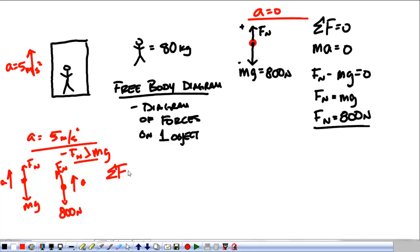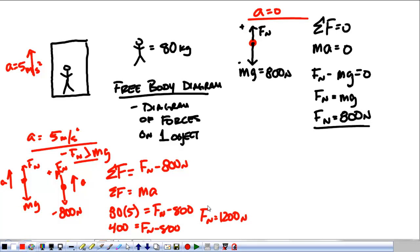We still have our weight of 800 newtons. The sum of my forces is going to be the normal force minus 800 newtons. I also know that the sum of my forces is equal to mass times acceleration. So, 80 times 5 is equal to the normal force minus 800. That's 400 equals the normal force minus 800. In this case, the normal force comes out to be 1,200 newtons.